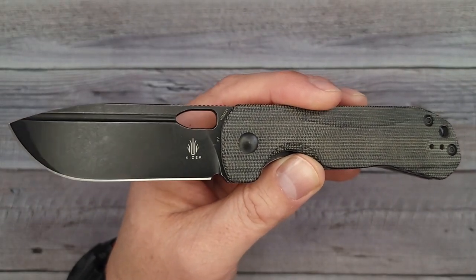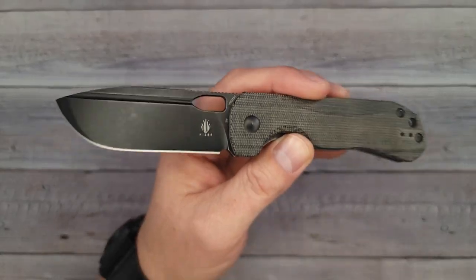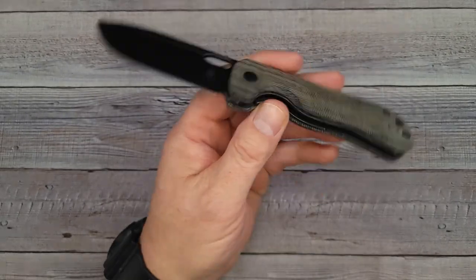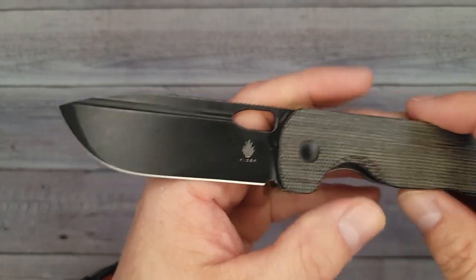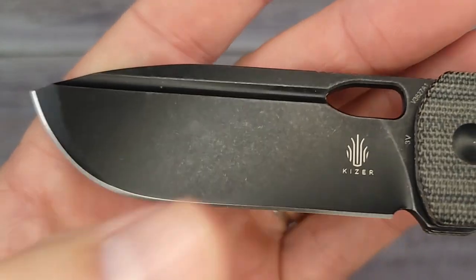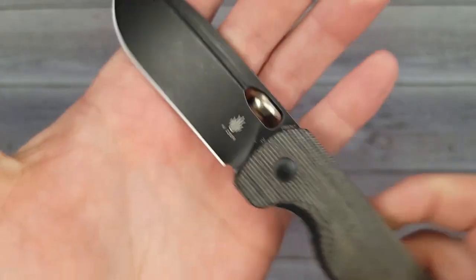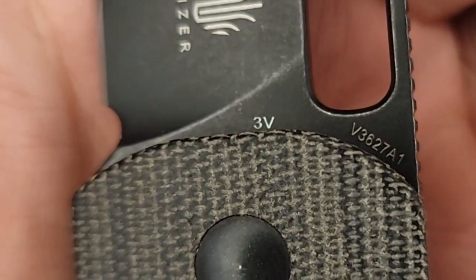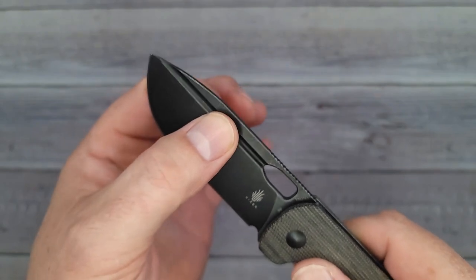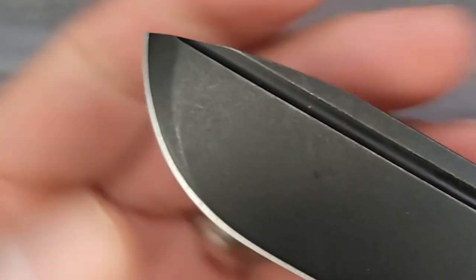It kind of reminds me of something you would use for camping, hunting, fishing kind of deal. Look at that blade. Love that black stonewash and this one is 3V. This is some heavy-duty sturdy steel right here and I love this blade.